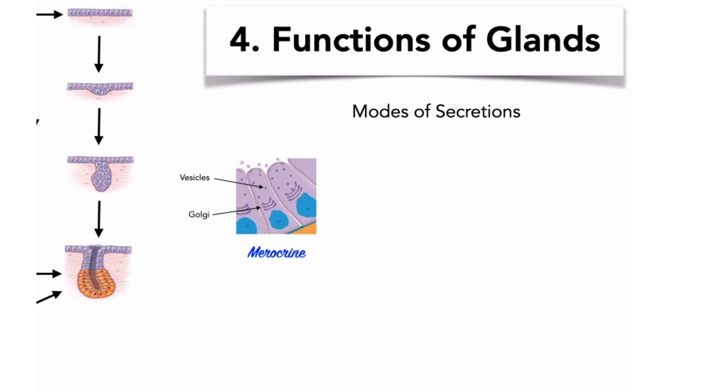Mucin is a protein that is secreted via merocrine secretion. Mucin protein mixes with water to form mucus. Mucus acts as a lubricant and or a protective barrier and a trap for foreign particles and microorganisms. In merocrine secretion, the product is released from secretory vesicles at the apical surface of the gland cell by exocytosis.